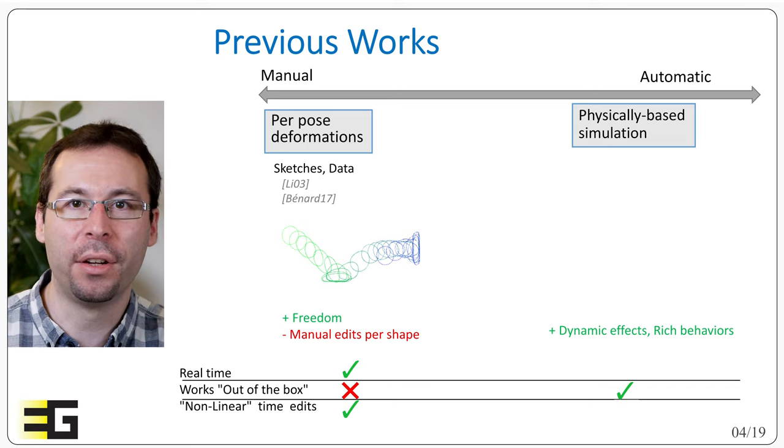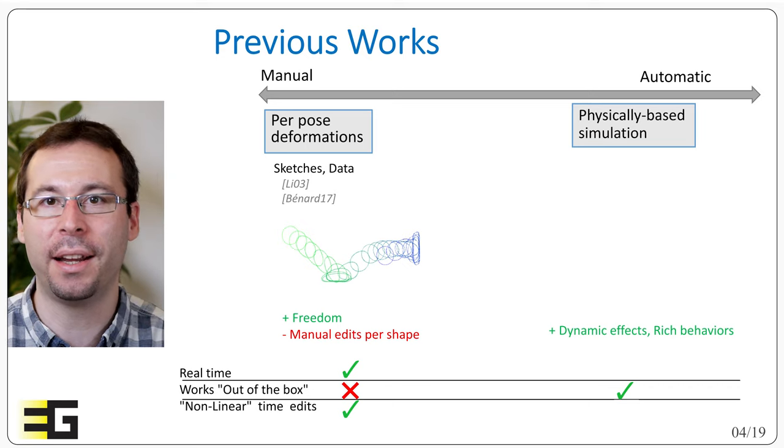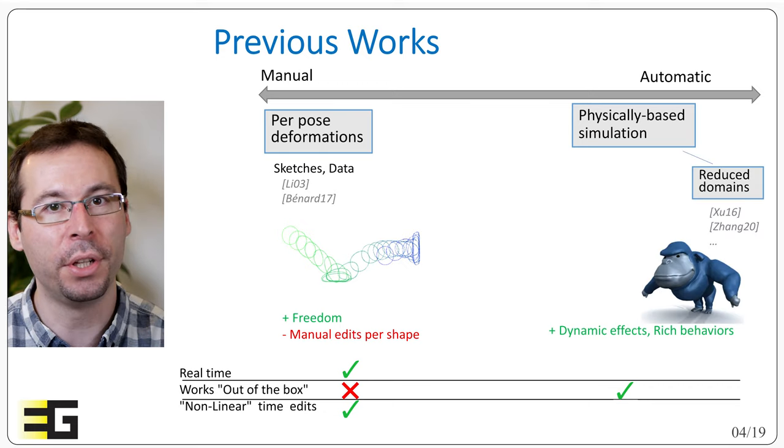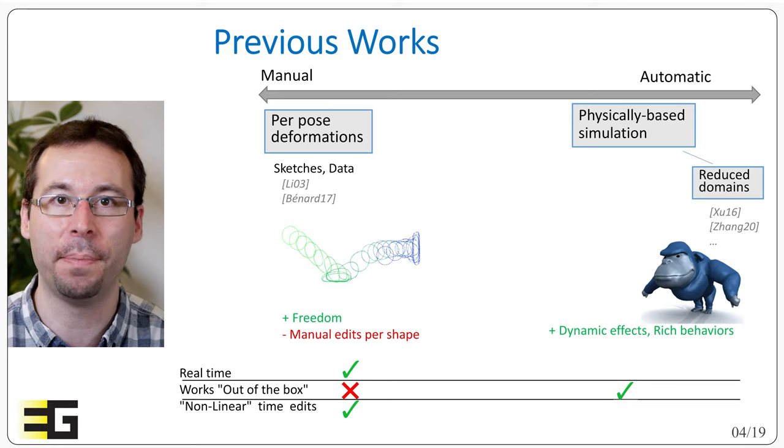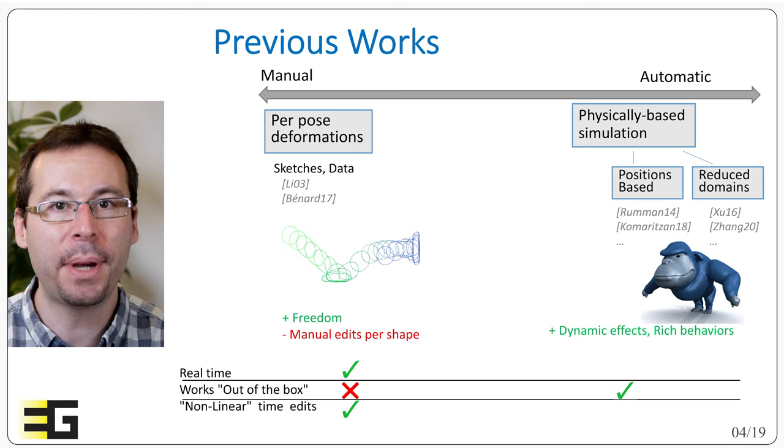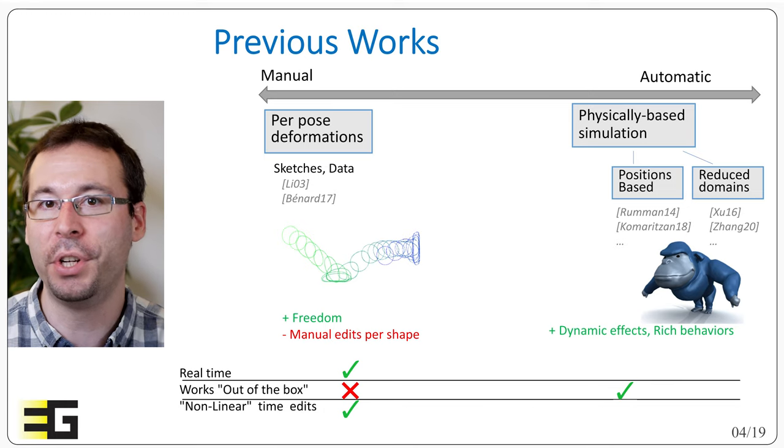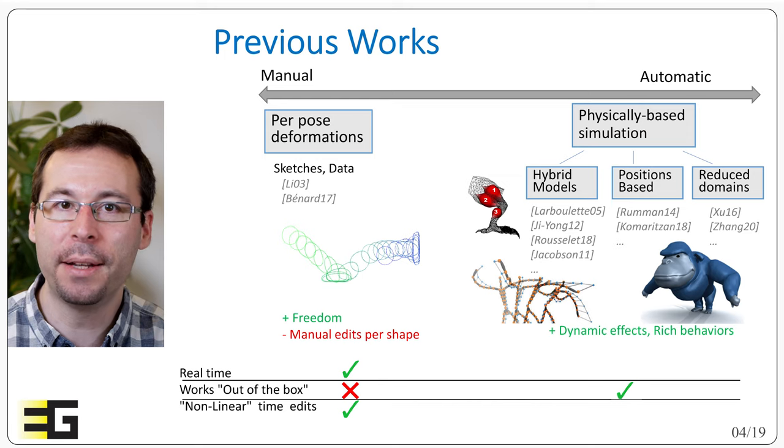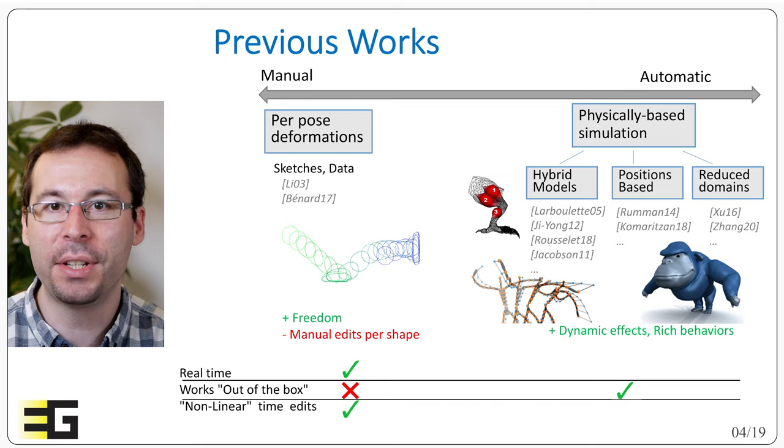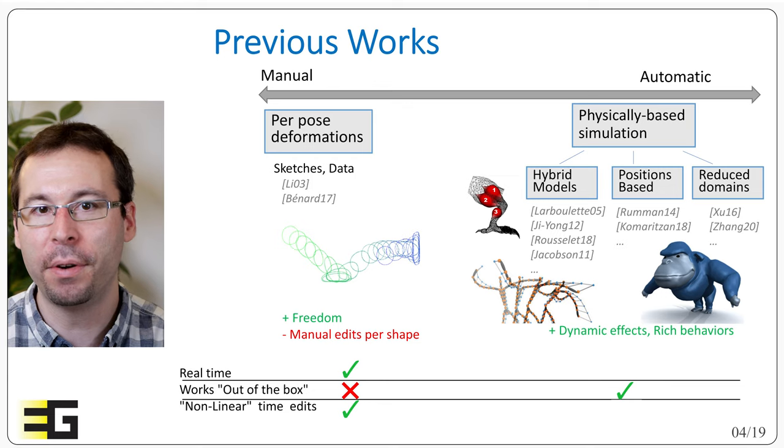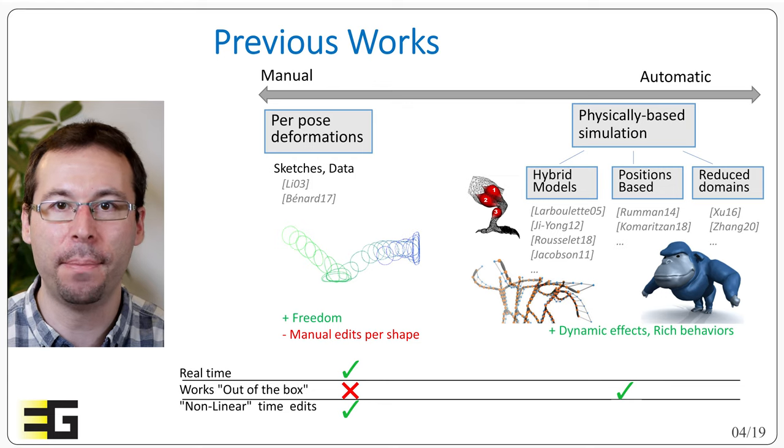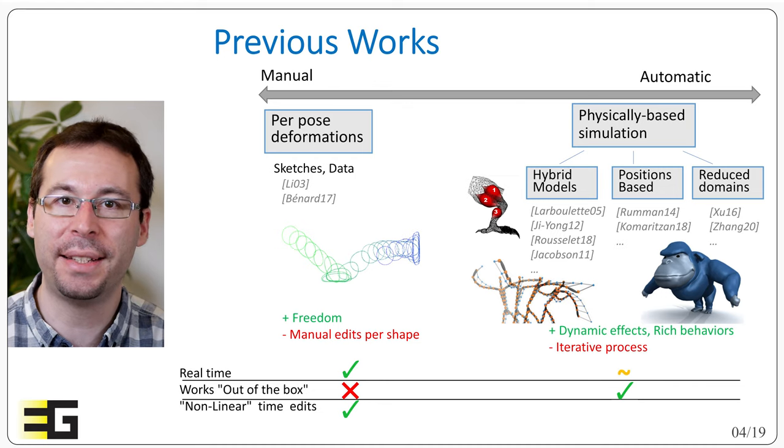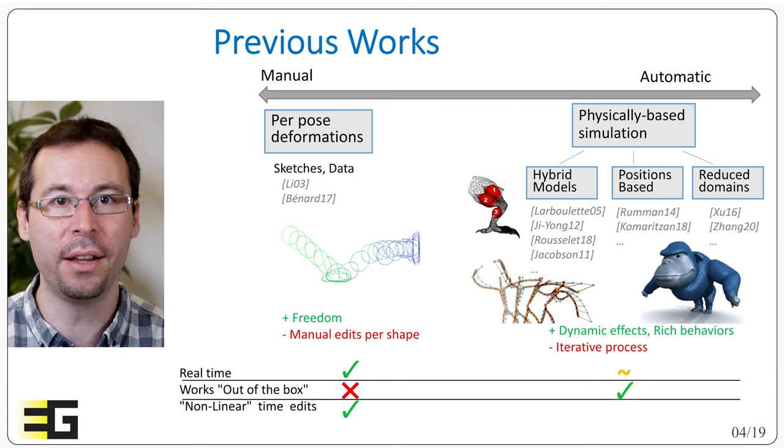Without going into details, we can note that fast simulations of elastic-like behavior have been developed through, typically, the use of domain reduction to reduce the degrees of freedom to a meaningful subset that can be pre-computed. Position-based dynamics and extension that allows to handle efficiently non-linear constraints and even stiff ones robustly. Or the use of what I will call hybrid models where simple physical elements are used to locally deform the geometry of the shape, for instance in adding some springs to model muscle effects, bouncing flesh or elastic limbs.